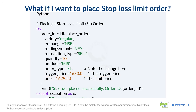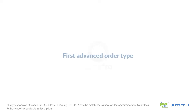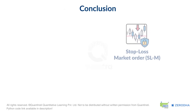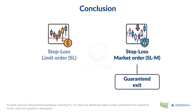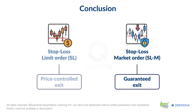It's that simple. And that's a wrap on our first advanced order type. Let's quickly recap what we covered. You know the critical distinction between an SLM order for a guaranteed exit and an SL order for a price-controlled exit. And most importantly, you saw how to implement both of them using just a few lines of Python code.